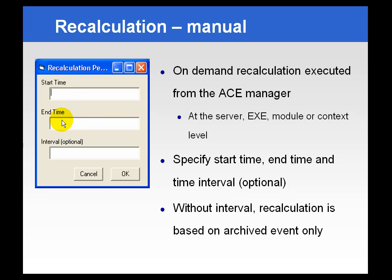You can use PI timestamps in these dialog box input areas. There's also an interval option where you can specify the interval at which to do the recalculations. If you leave the interval option blank, we will simply use every archive event from the inputs to do the calculation. Keep in mind that if you are using the compression process on the PI server, there will potentially be many fewer values that ACE would have seen, as opposed to the snapshot.